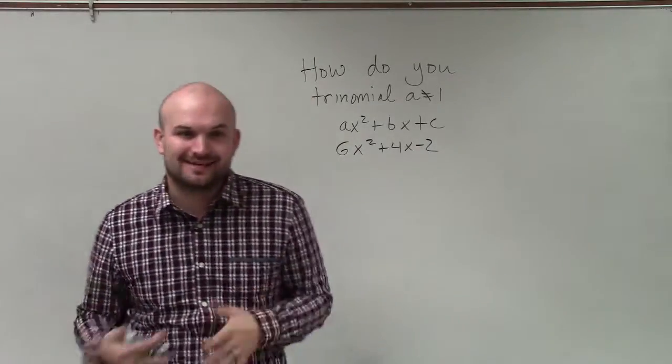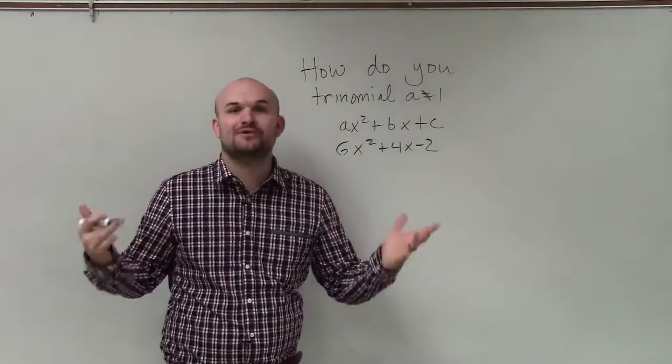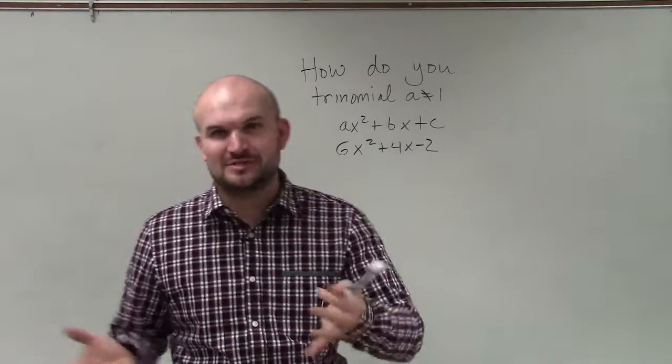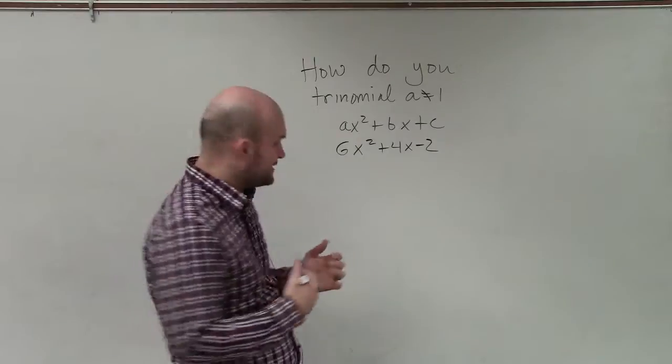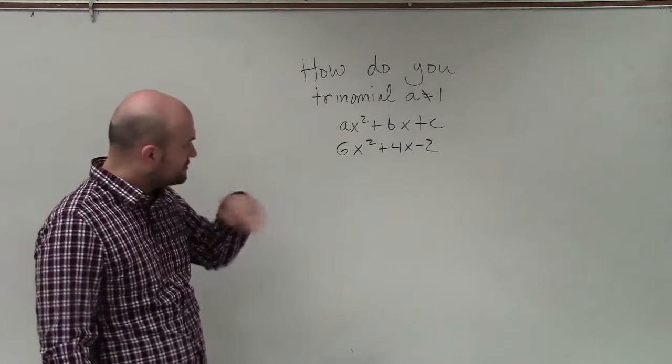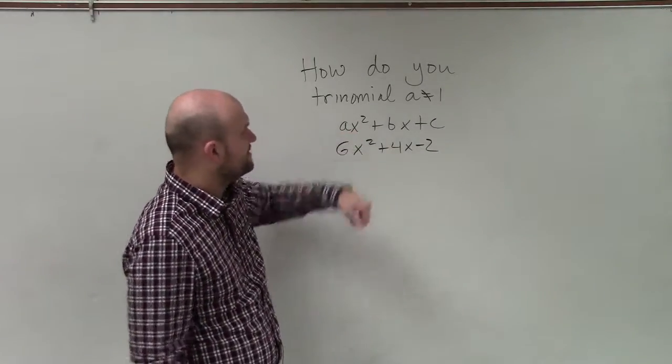And really, the only way I could think about doing this where it's not so confusing is to actually just use an example and go really in-depth with my explanation. When we have a trinomial, we have ax² + bx + c.